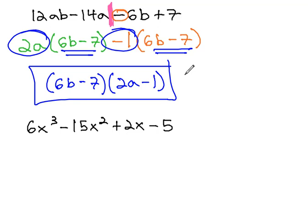This next example has a very similar theme to it. We have 6x cubed minus 15x squared plus 2x minus 5. As usual when factoring, we split down the middle. When factoring by grouping with four terms, we split down the middle after the second term.